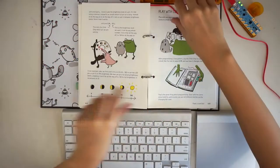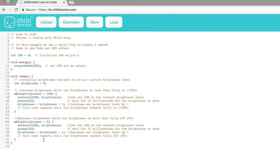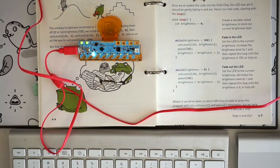Next, we learn how to make a smooth fading effect using a while loop. Let's preview the fade with while loop example code. The LED's brightness levels now change smoothly thanks to the while loop.